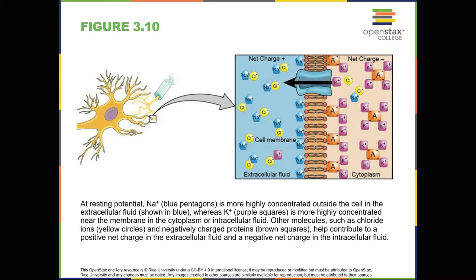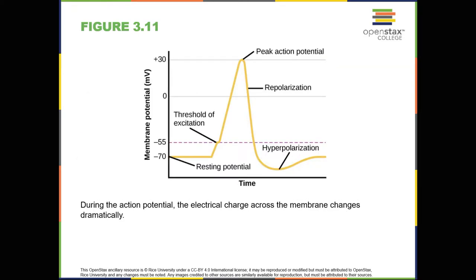From this resting potential state, the neuron receives a signal and its state changes abruptly, as shown in Figure 3.11. When a neuron receives signals at the dendrites due to neurotransmitters from an adjacent neuron binding to its receptors, small pores, or gates, open on the neuronal membrane, allowing those sodium ions propelled by both charge and concentration difference to flood into the cell. With this influx of positive ions, the internal charge of the cell becomes more positive. If that charge reaches a certain level, called the threshold of excitation, the neuron becomes active and the action potential begins.